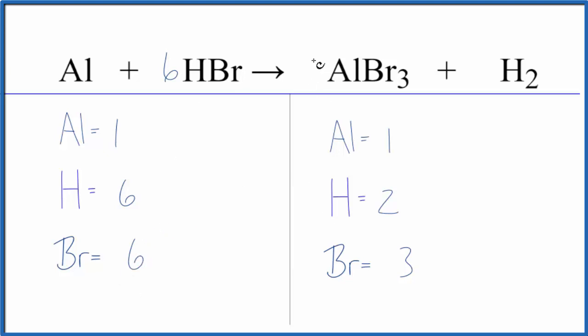If we put a two as our coefficient, three times two, that gives us six. And then aluminum, one times two. That'll give us two aluminums.